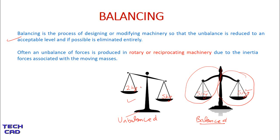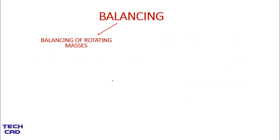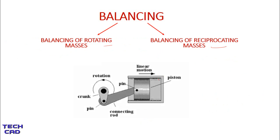What kind of products do we have to balance? An unbalance of forces is produced in rotary and reciprocating machinery due to inertia forces associated with the moving masses. We balance two types of masses: balancing of rotating masses and balancing of reciprocating masses. For example, the piston is reciprocating inside the engine, while the crank is rotating — so this is a rotating part and that is a reciprocating part.